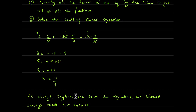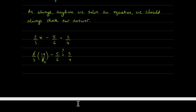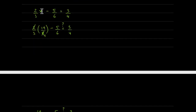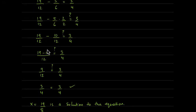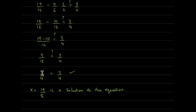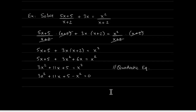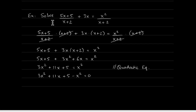Anytime we solve an equation we should always check our answer. I copied the equation, replaced x with 19 over 8, did the arithmetic, and got three-fourths equals three-fourths. Whenever a number equals a number and that's a true statement, the value we plugged in is indeed a solution to our equation.